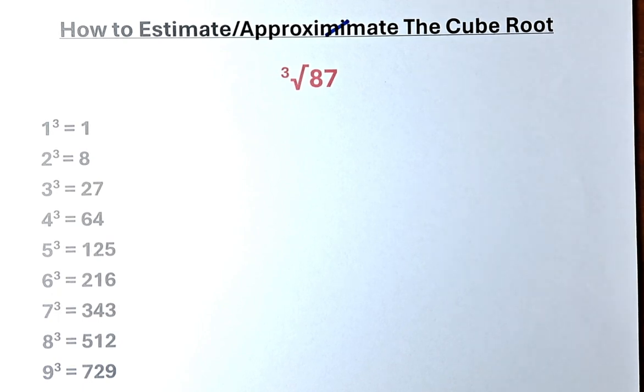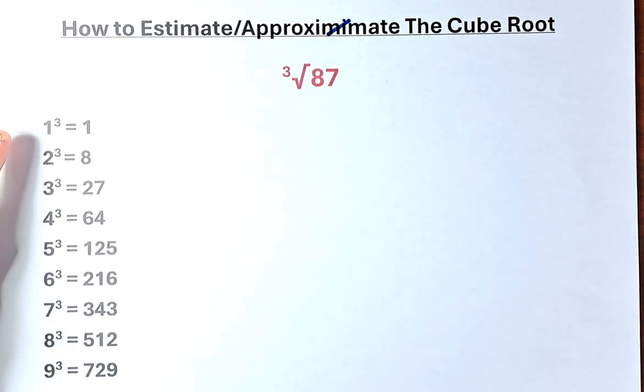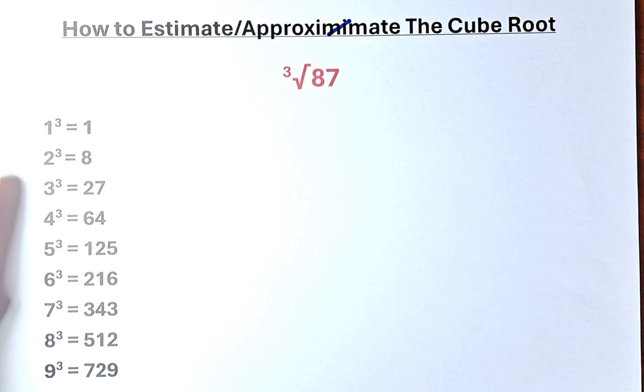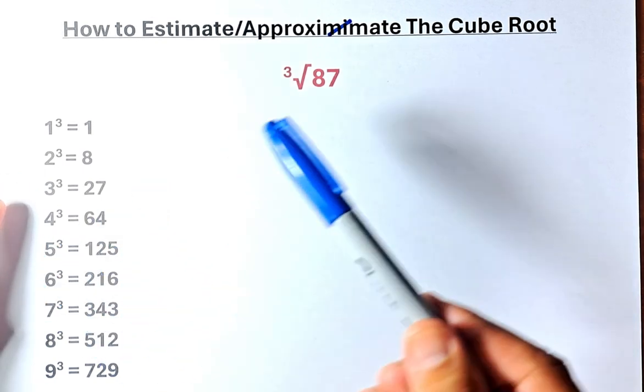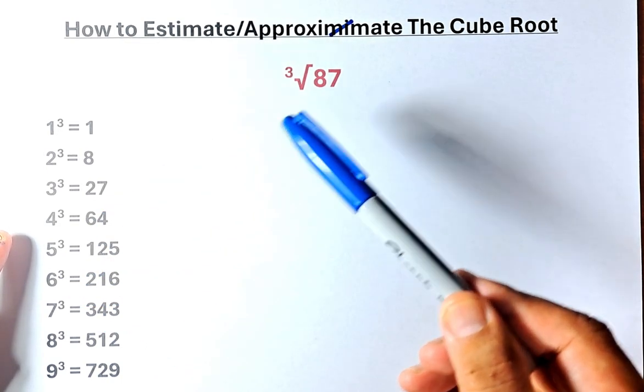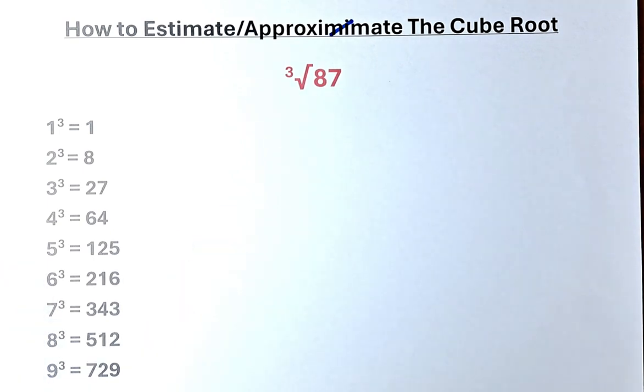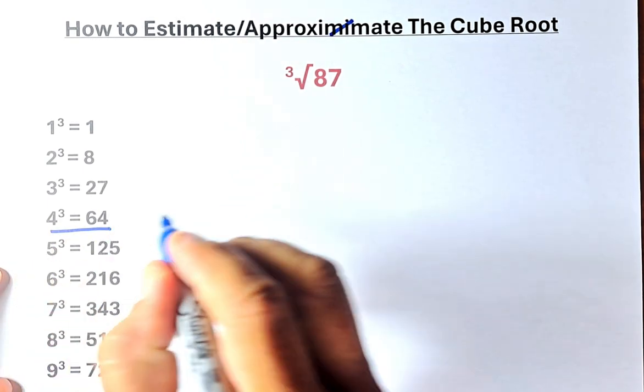So the cube root of 87, the first thing you need to find is the cube so that it doesn't exceed 87. So 1 cubed, 2 cubed, 3 cubed which is 27, 87 is bigger than 27, 4 cubed is still smaller than 87, but 5 cubed is larger than 87 so that's where we stop. So we have to look at this number here, 4 cubed is 64.